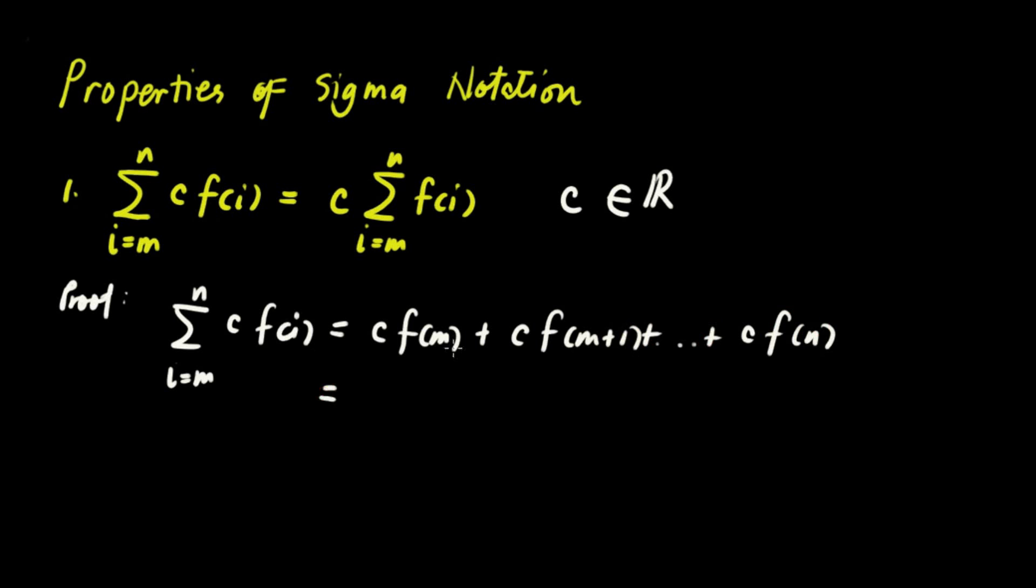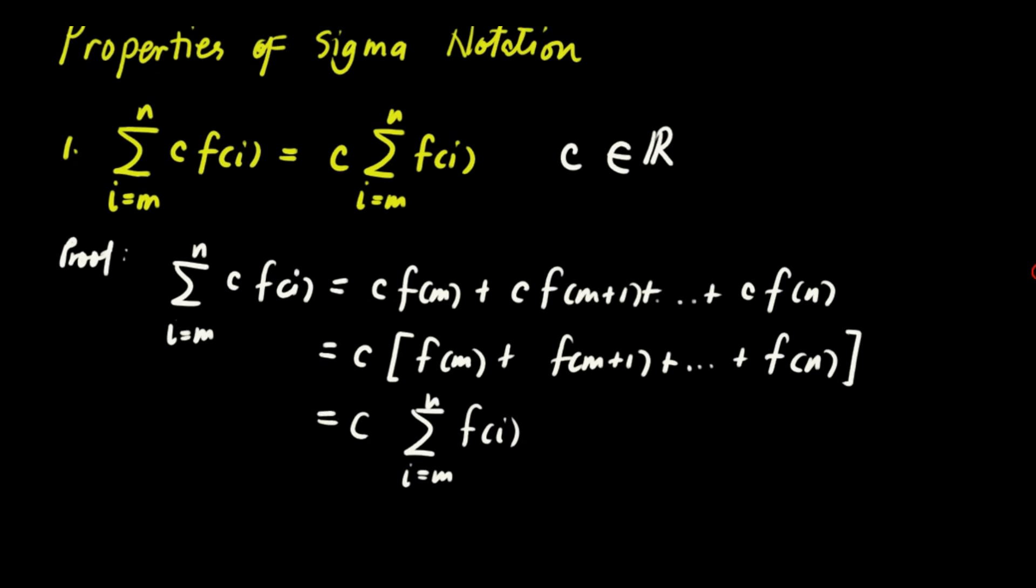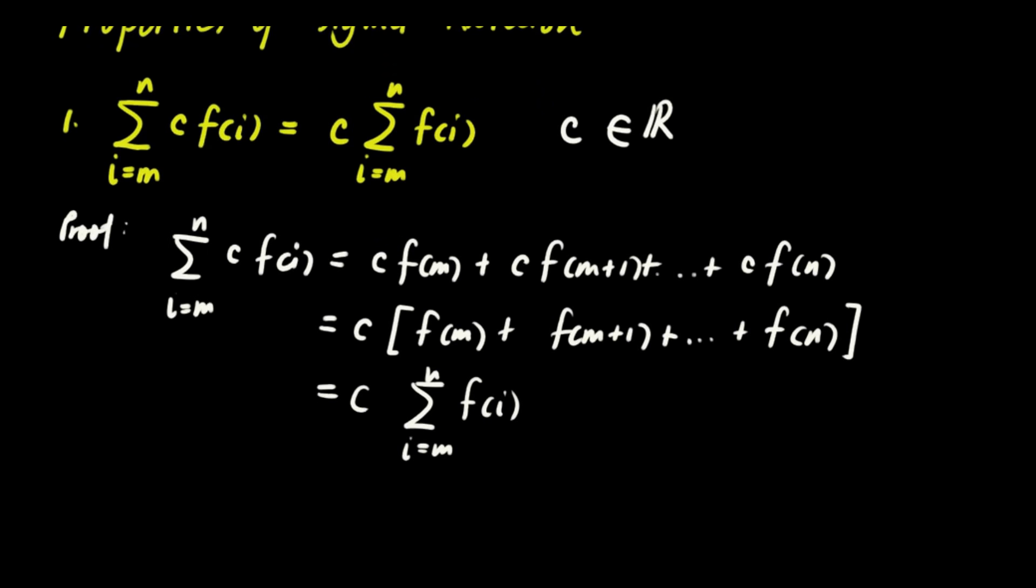And then we can factor out c. Right? Lahat ng terms may c. So you can factor out c and then you will have f of m plus f of m plus 1 plus up to f of n. And this whole thing here is equivalent to the summation of f of i as i runs from m to n. There you go. So that's the first property of sigma notation.